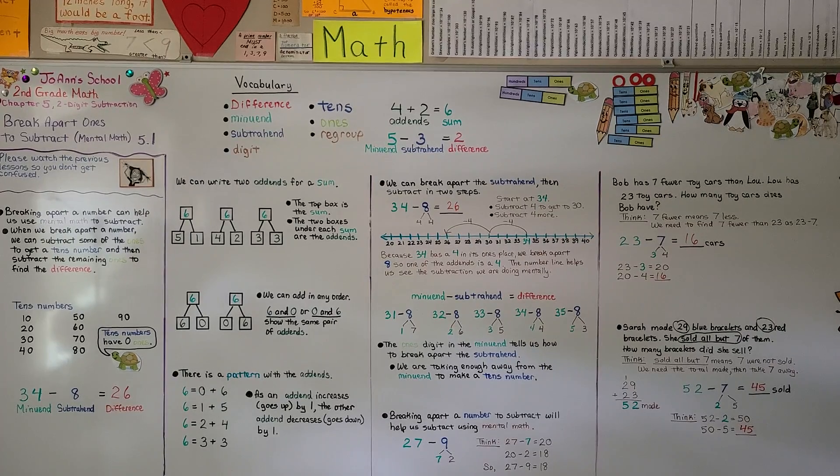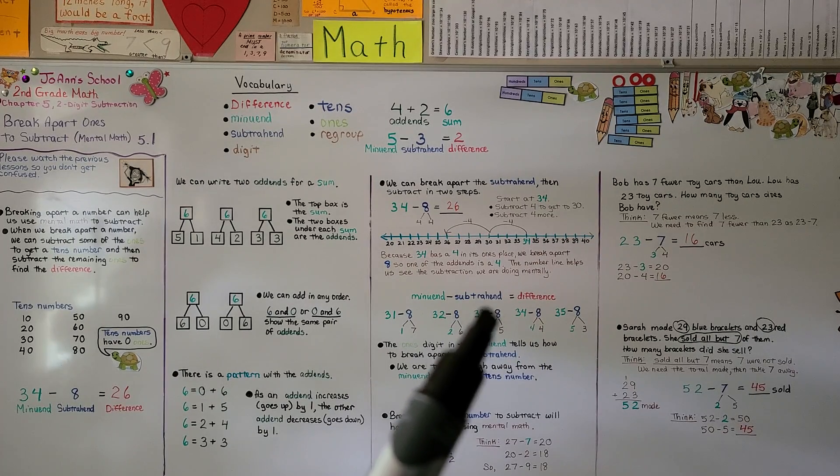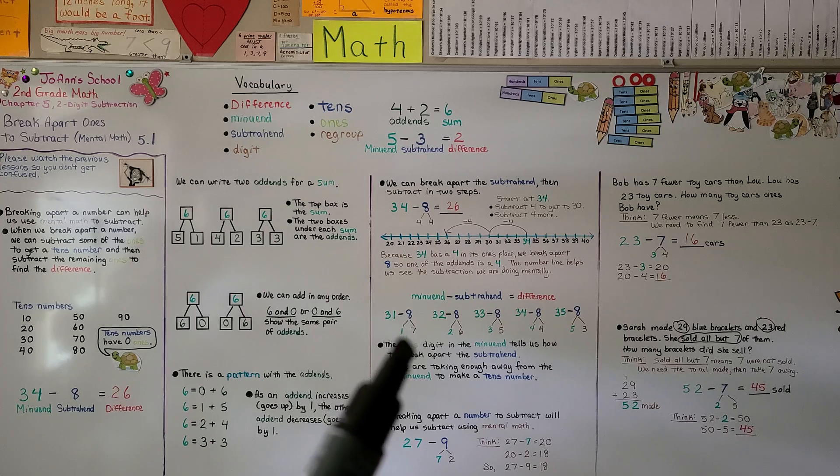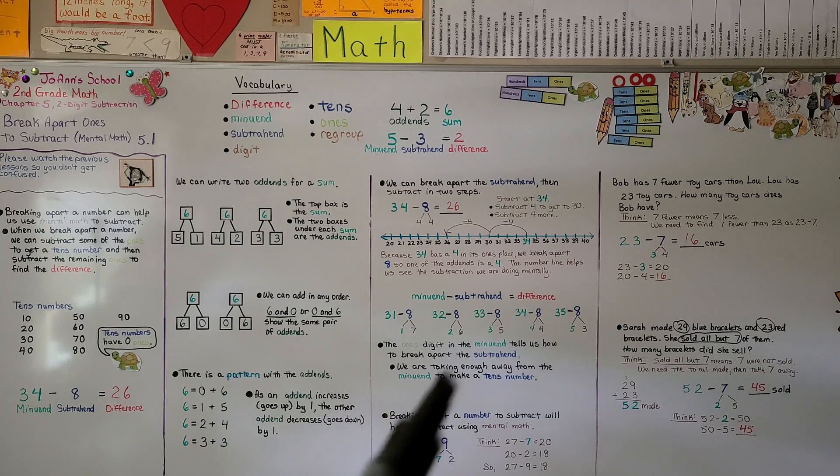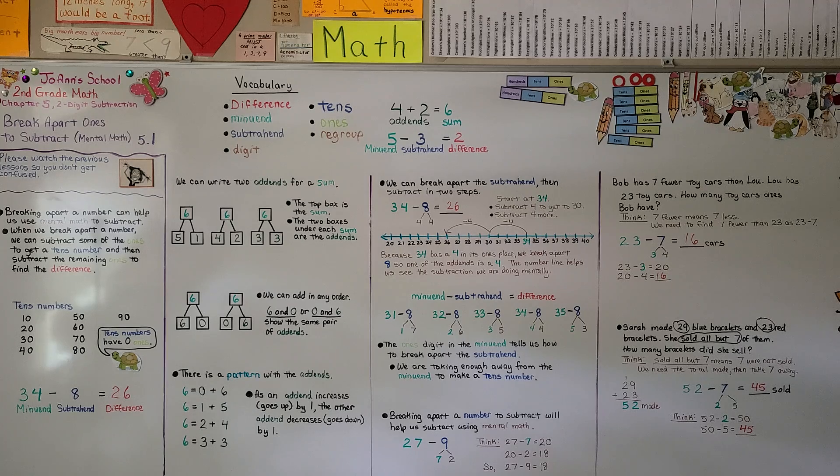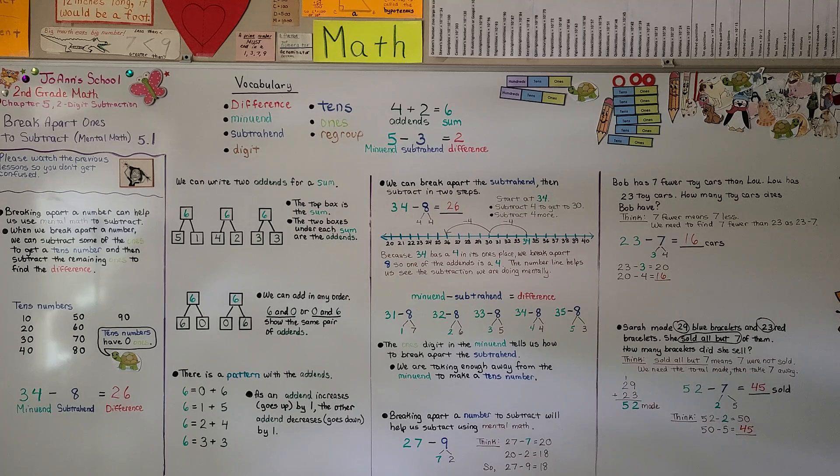Remember, we're breaking apart the subtrahend. The ones place of the minuend tells us the addend that we need to take away to get to a tens number first, then we subtract the rest. Our next lesson, 5.2, we're going to break apart two-digit numbers to subtract. I hope I'll see you there.